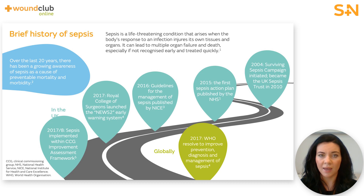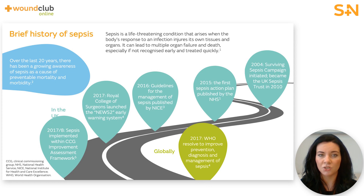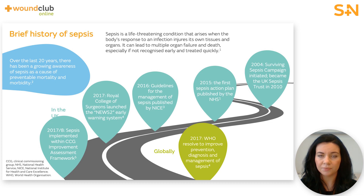New initiatives in the UK included implementing sepsis within the CCG improvement assessment framework in 2017 and 2018. In 2017, the Royal College of Physicians also launched a modified version of the national early warning score known as NEWS2. This is a tool used to monitor patients in hospital as an early warning system to spot patients at risk of rapid deterioration. Although designed to identify deterioration from any cause, it has also been very useful in identifying deterioration from sepsis. Here in the UK, we have at our disposal a selection of tools designed to improve the early detection of sepsis.